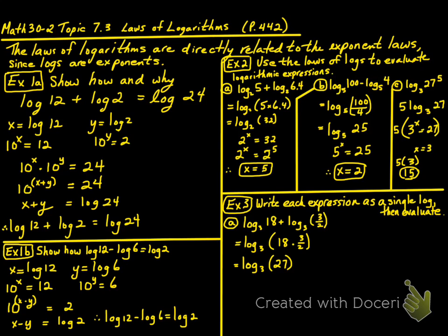This equals log₃(18 × 3/2) = log₃(27). Since 3^x = 27, that means 3^x = 3^3, so x equals 3.